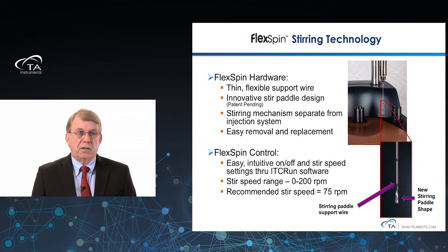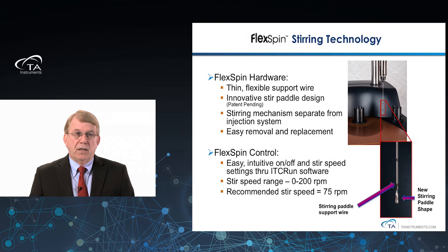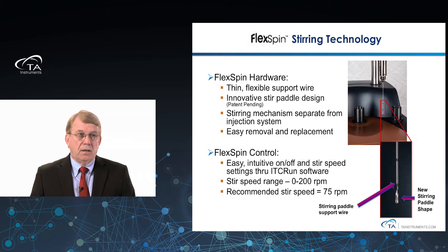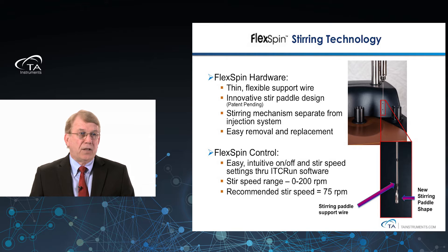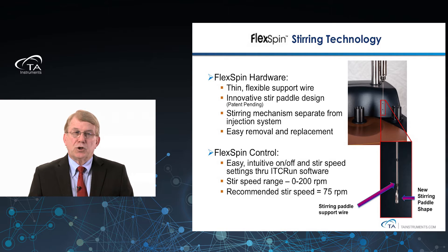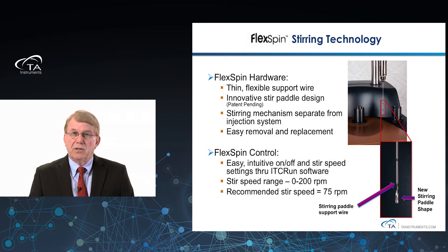Flex-spin stirring — what is it? You have a very thin flexible support wire that comes down and supports an innovative stir paddle design. As you see in the inset, it is separate from the injection cannula that comes down right beside it. The flex-spin control is programmable; the on/off and stir speeds are controlled from ITC Run. The stir speed range is from about 0 to 200 RPM with a recommended stir speed of 75 RPM, so that sensitive or fragile proteins are not damaged by excess stir speeds during the ITC titration.